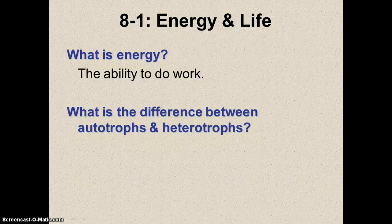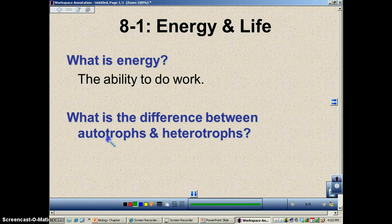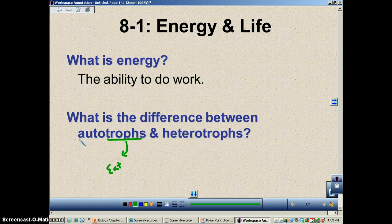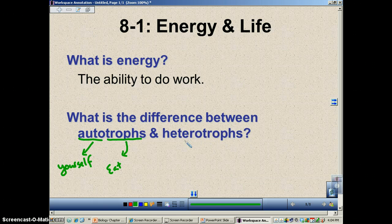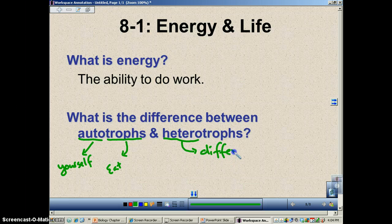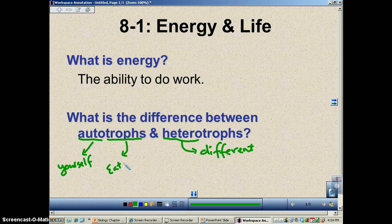The first one is an autotroph. The word 'trof' means to eat, and 'auto' essentially means yourself. So an autotroph essentially eats itself because it makes its own food. Over here we have 'trof' again, which also means to eat, but we have 'hetero,' and hetero means different. So a heterotroph gets its food from something different than itself, while an autotroph gets its energy from itself.